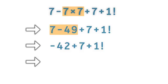Now minus 42 plus 7 gives minus 35. Now the expression becomes minus 35 plus 1 factorial.